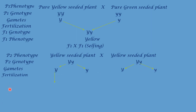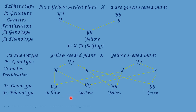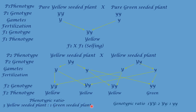During fertilization, male and female gametes unite to form zygotes. The four offspring are: capital Y capital Y, capital Y small y, capital Y small y, and small y small y. The first three are yellow seeded pea plants and the last is green seeded pea plant. So phenotypic ratio is 3 yellow seeded : 1 green seeded, and genotypic ratio is 1 YY : 2 Yy : 1 yy.